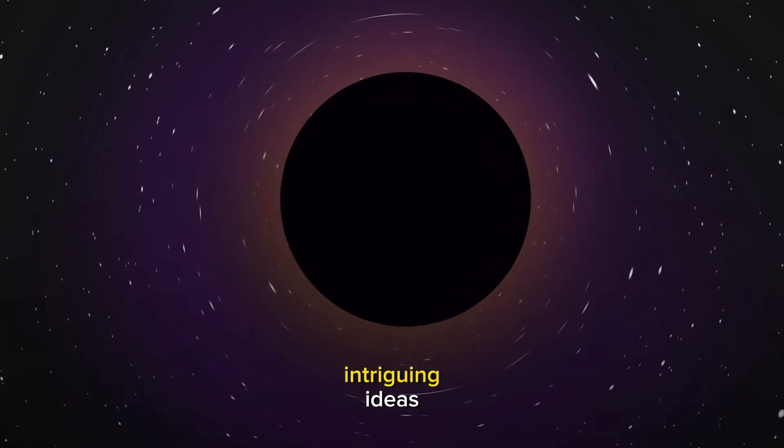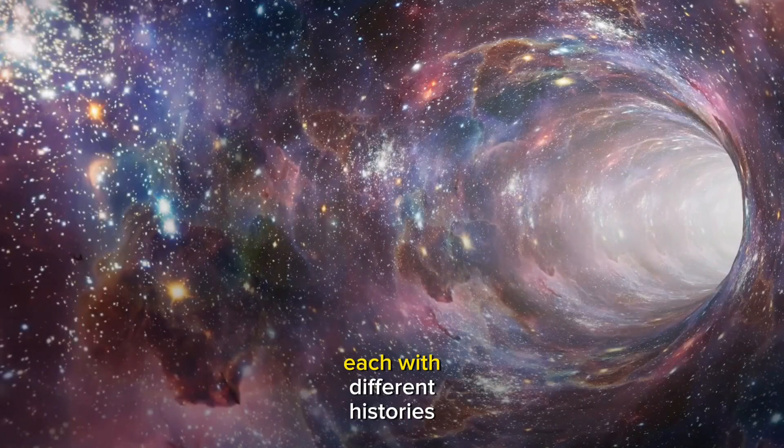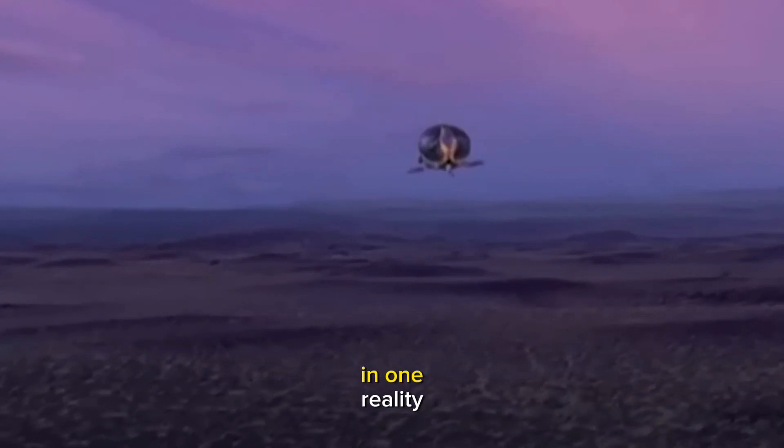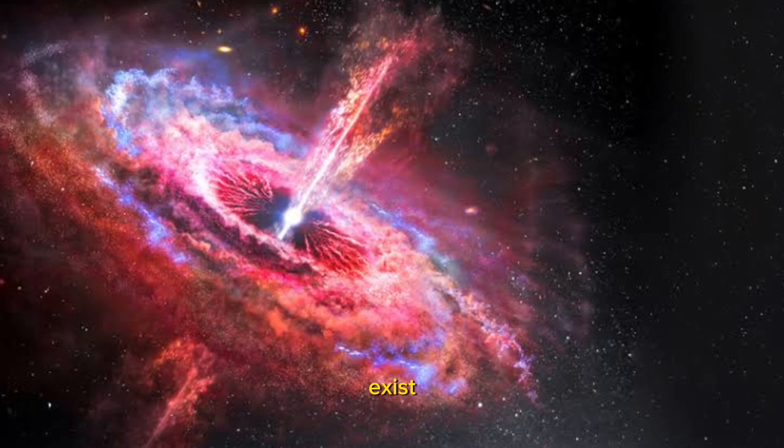Stephen Hawking had some intriguing ideas. He suggested that alternate universes exist, each with different histories. In one reality, you'd fall into a black hole, while in another, the black hole wouldn't exist.